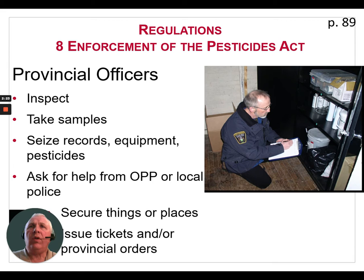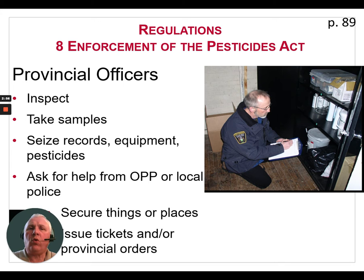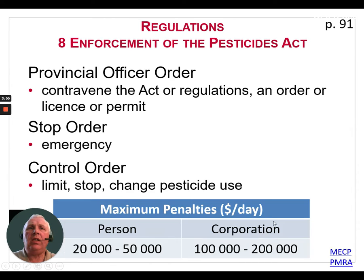When it comes to enforcement of the Pesticide Act, we have provincial officers in Ontario who carry out this task. They are allowed to inspect crops and places of business and farms. They can take samples, seize records, equipment, and pesticides, and they can ask for help from the OPP or local police. They can also secure things or places — seal off a building or a field — and they can issue tickets and/or provincial orders.